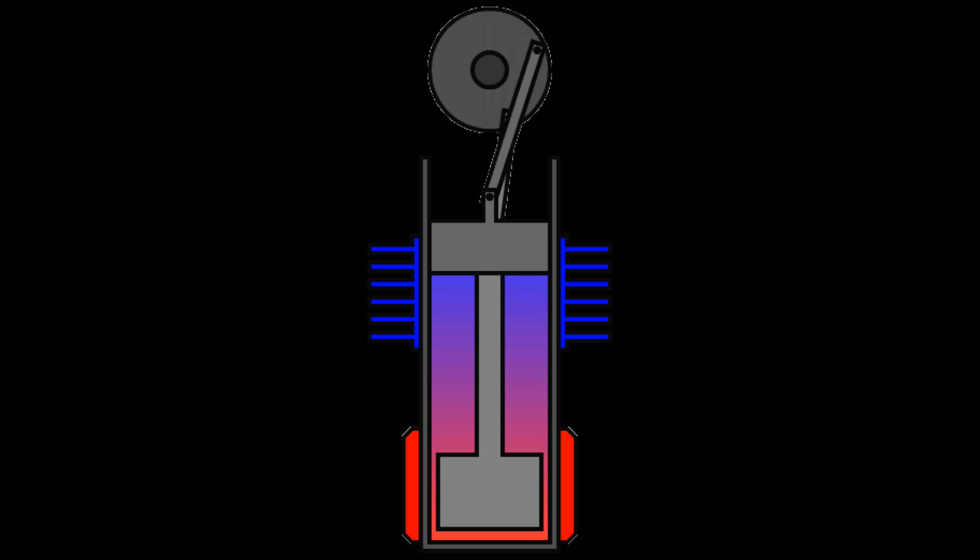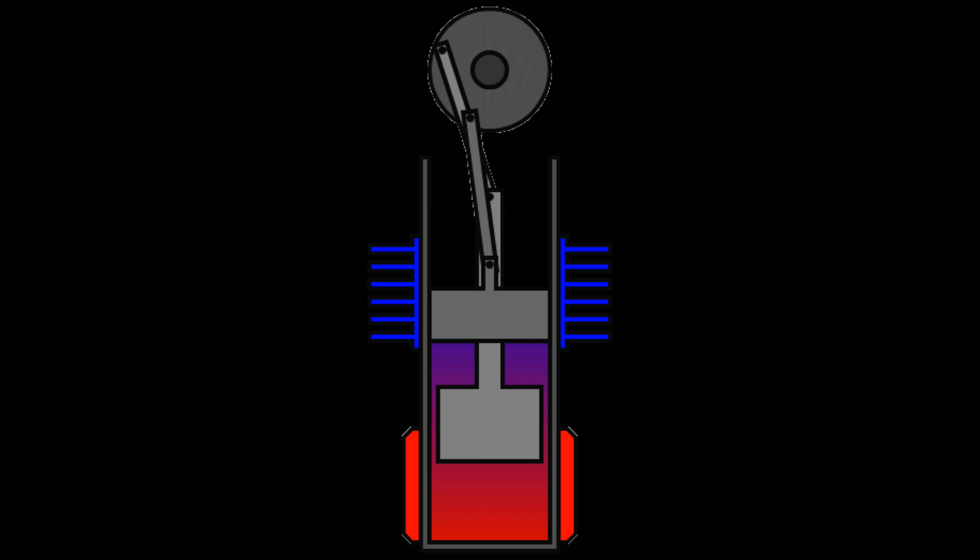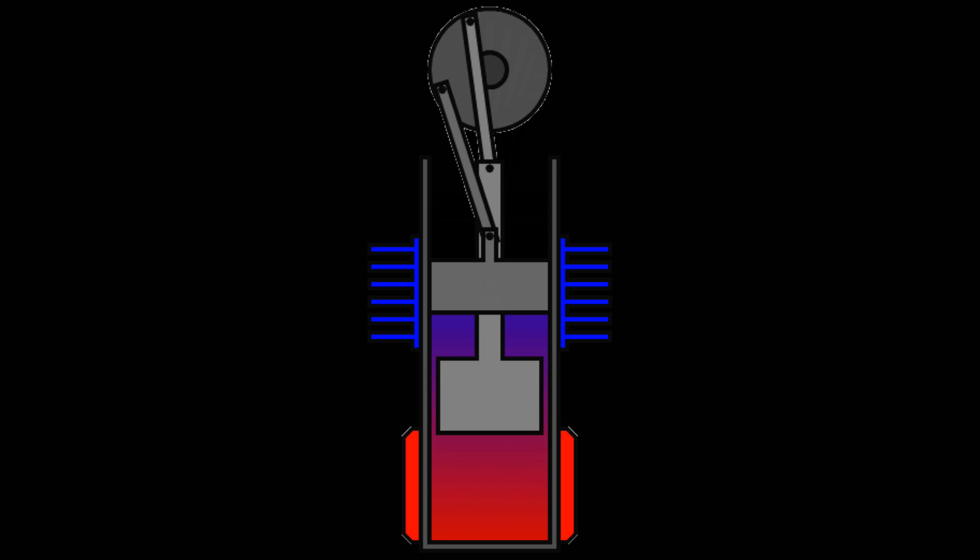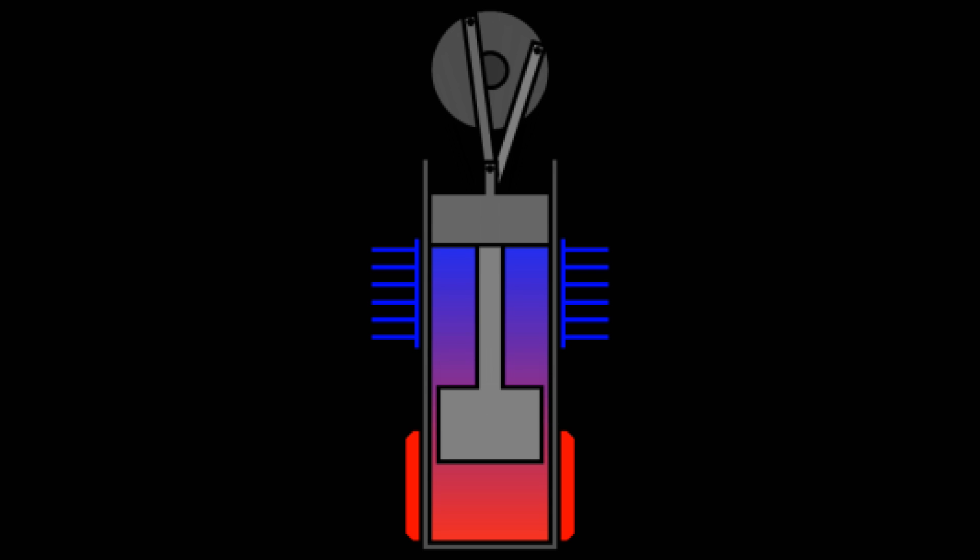The operating principle of a simple Stirling engine is the next. There is the working piston in main cylinder. The main cylinder is heated. Air within it is heated too. Air expands and pushes the piston.